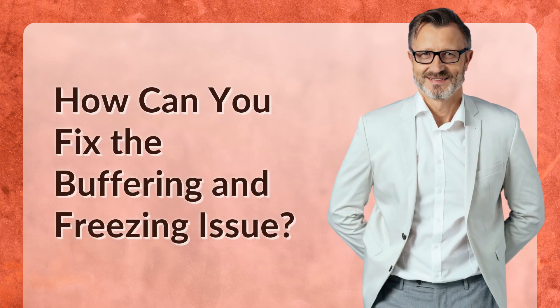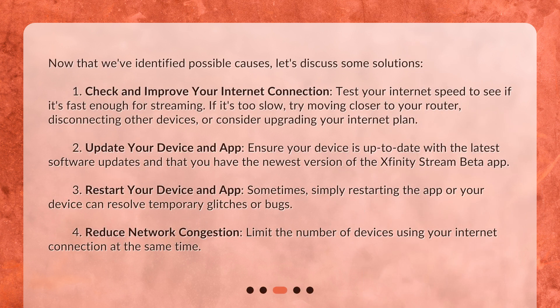How can you fix the buffering and freezing issue? Now that we've identified possible causes, let's discuss some solutions. First, check and improve your internet connection — test your internet speed to see if it's fast enough for streaming. If it's too slow, try moving closer to your router, disconnecting other devices, or consider upgrading your internet plan. Second, update your device and app: ensure your device is up to date with the latest software updates and that you have the newest version of the Xfinity Stream Beta app.